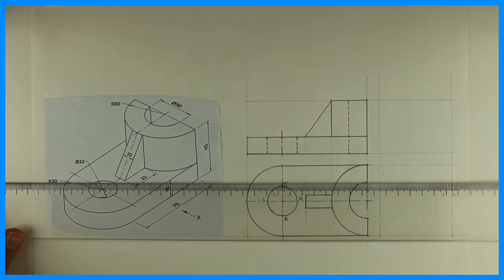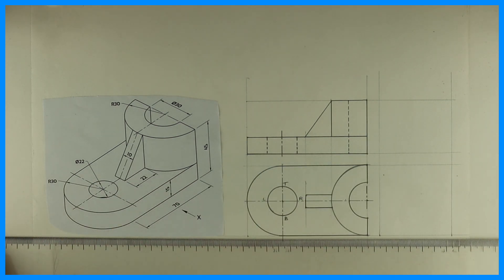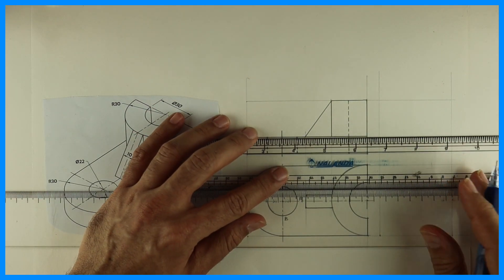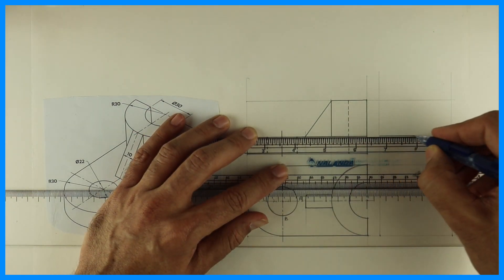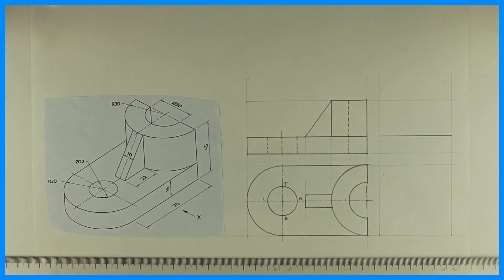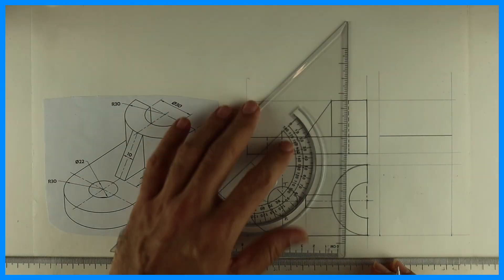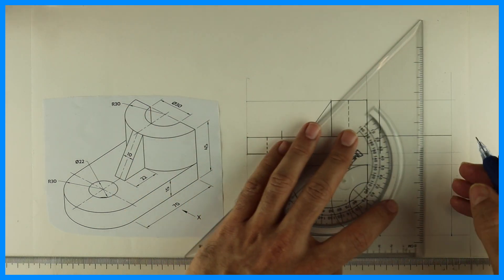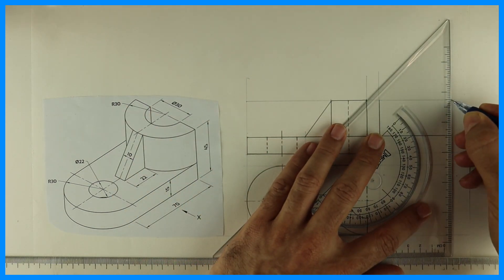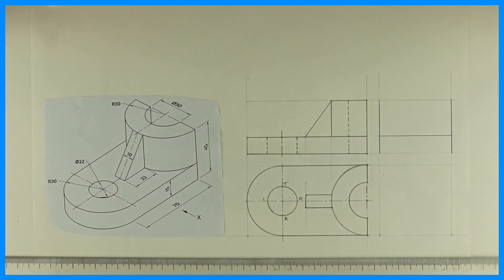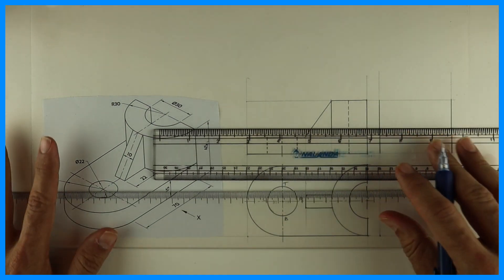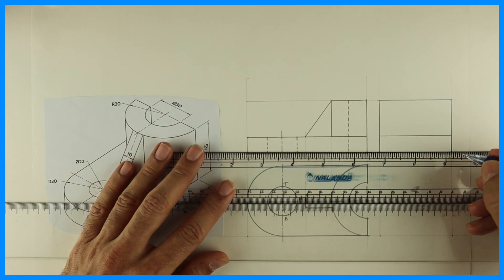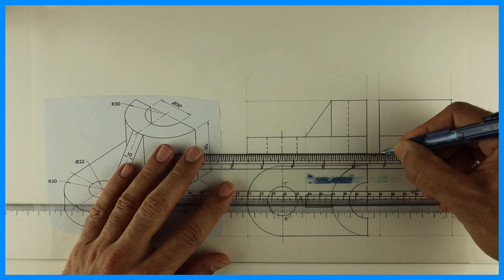Now we'll draw side view. In side view, again you'll see rectangle. So we'll project from front view. Always remember, circle in one view, other two views will be same. So we'll get this complete rectangle.